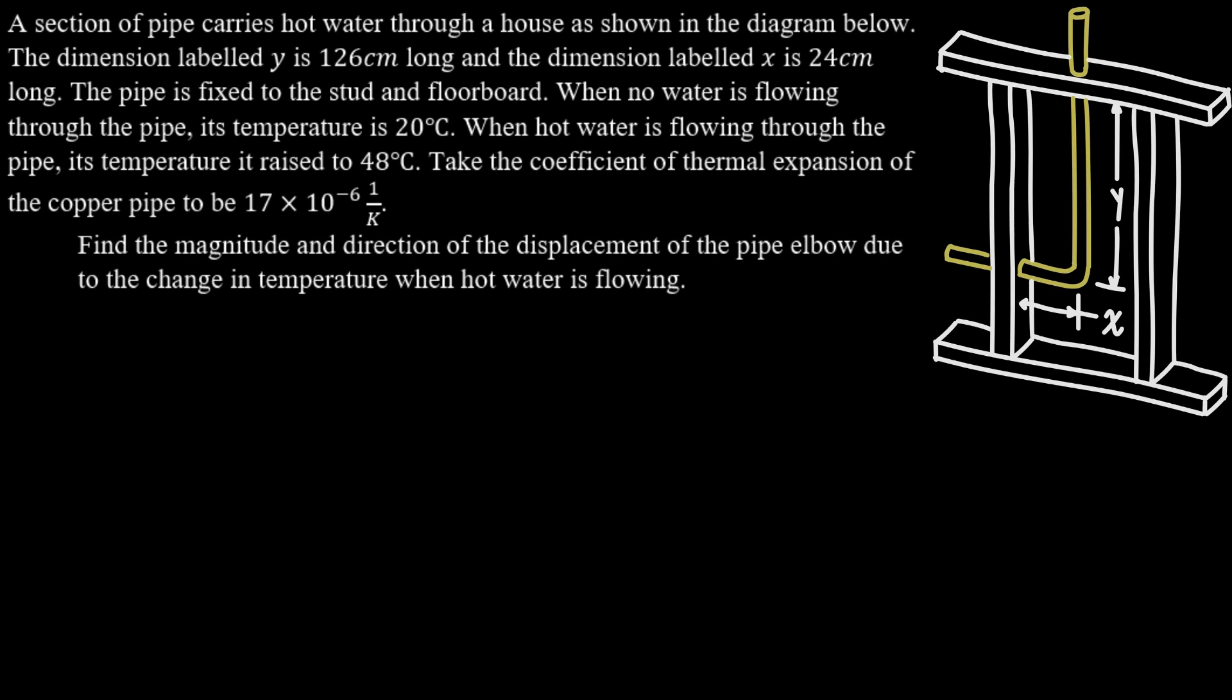So we have a section of pipe which carries hot water through a house as shown in the diagram here. So the yellow piece here is the pipe and then the white is going to be the studs and the floorboard. The dimension labeled y is 126 centimeters long and the dimension labeled x is 24 centimeters long.